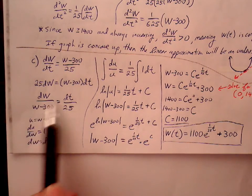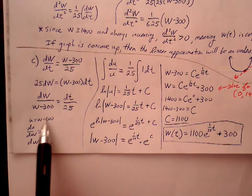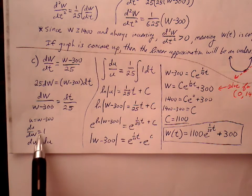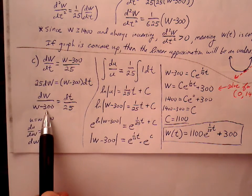So I'll divide the (W - 300) over. I'm going to also move this 25 over to the right side. Go ahead and take the antiderivative of both sides of the equation. I'll go ahead and let the u value be W - 300. du/dW is equal to 1. dW equals du. So I'm going to make my substitutions here.